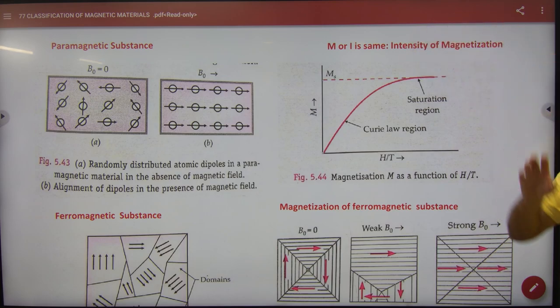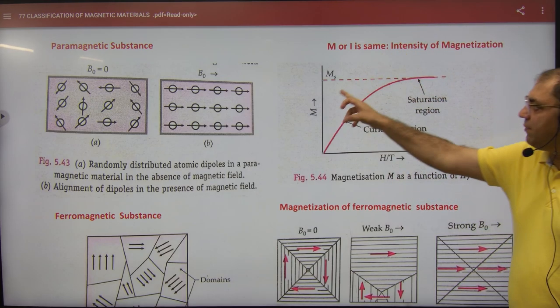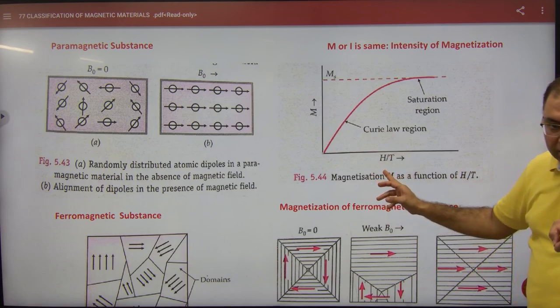Now they are saying that this is capital M. We will take I. I have written I here. So I and H versus T. Let me do this.